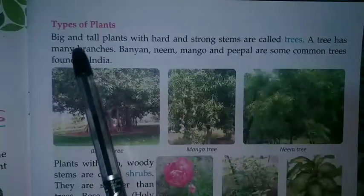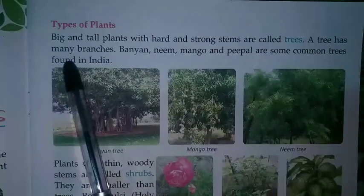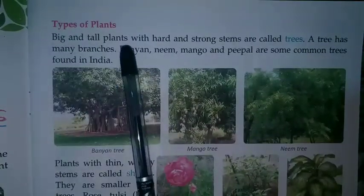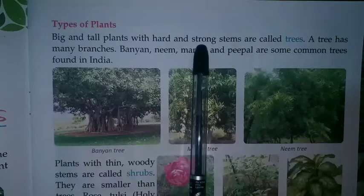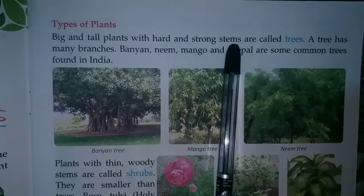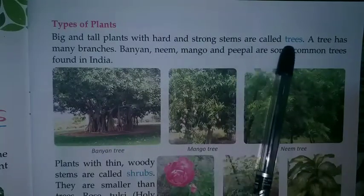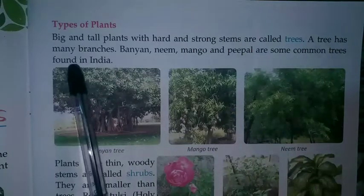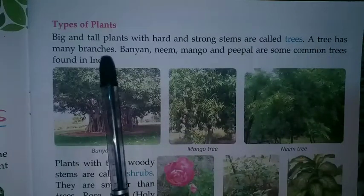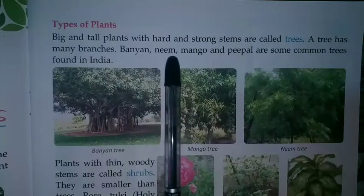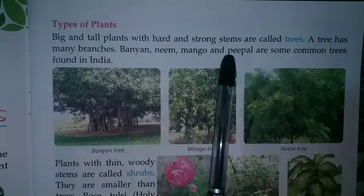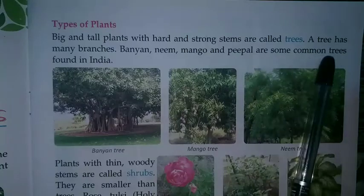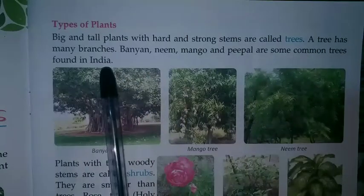Types of Plants. Big and tall plants with hard and strong stems are called trees. A tree has many branches. Banyan, neem, mango and peepal are some common trees found in India.